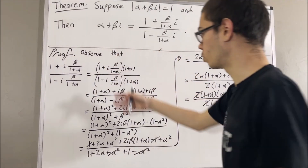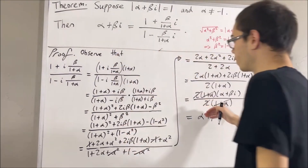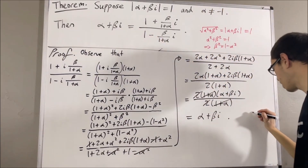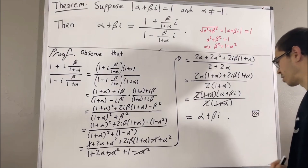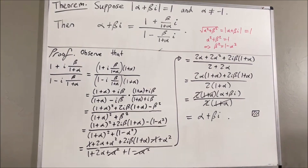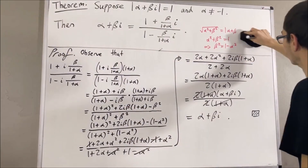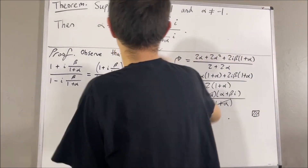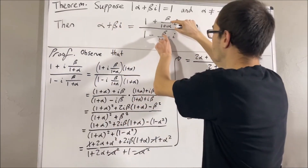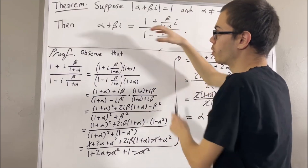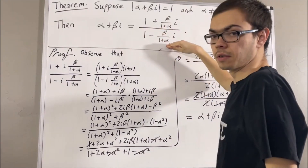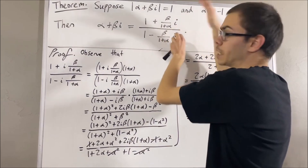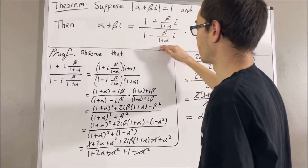And, so, through this chain of equalities, we've established that these two expressions are equal. And, so, this completes the proof. Now, not only is beta over 1 plus alpha a real number that satisfies this condition, but, also, beta over 1 plus alpha is the only real number that will satisfy this condition.